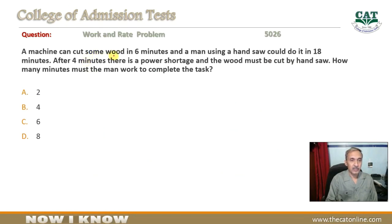A machine can cut some wood in six minutes and a man using a handsaw could do it in 18 minutes. After four minutes there is a power shortage and the wood must be cut by handsaw. How many minutes must the man work to complete the task?